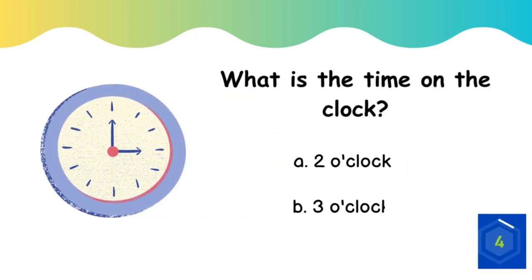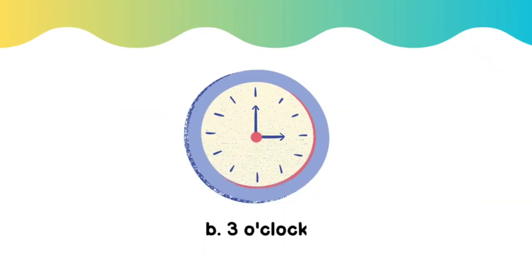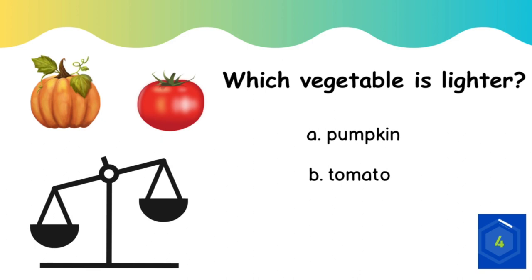What is the time on the clock? Three o'clock. Which vegetable is lighter? Tomato.